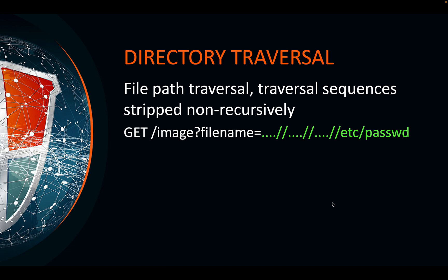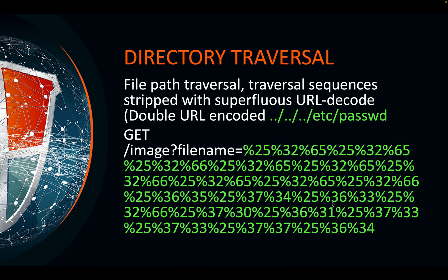This one is file path traversal sequences stripped non-recursively. What they do sometimes is filter only one occurrence — the regex is misconfigured — so they filter a dot-dot-slash sequence, but if you put four dots and two slashes, the filter removes only two dots and a slash, leaving two dots and a slash remaining. This bypass has worked numerous times.